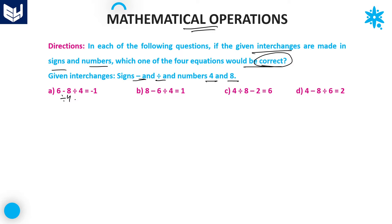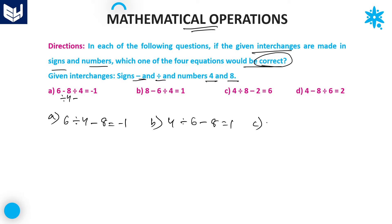After the interchange — minus is replaced with divided-by, and eight becomes four — the options are: A) six divided by four minus eight equals minus one; B) four divided by six minus eight equals one; C) eight minus four divided by two equals six; and D) eight divided by four minus six equals two.